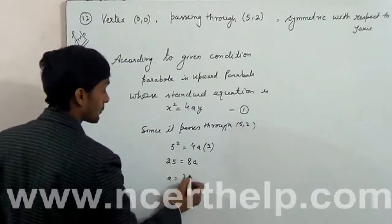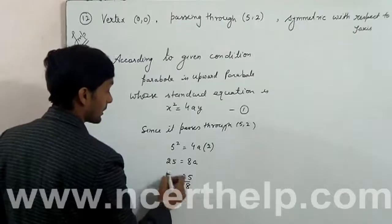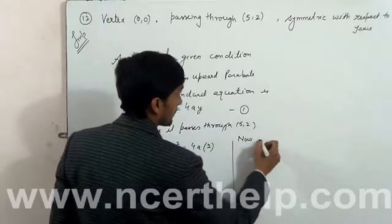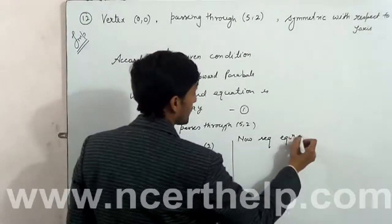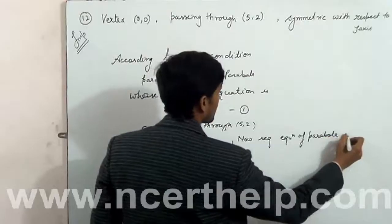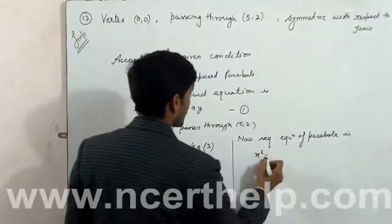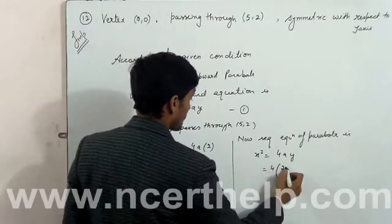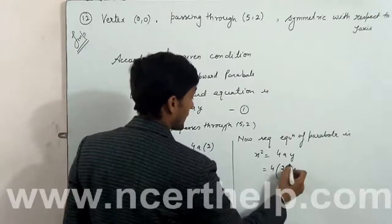The value of a is 25/8. Now, the required equation of the parabola is x² = 4ay, where a = 25/8, giving us x² = 25y/2.